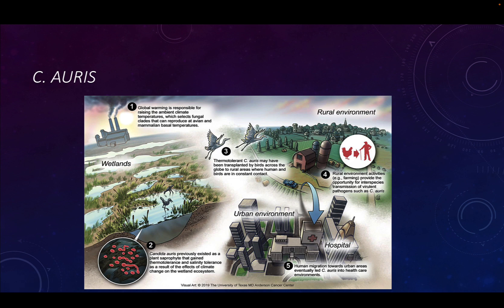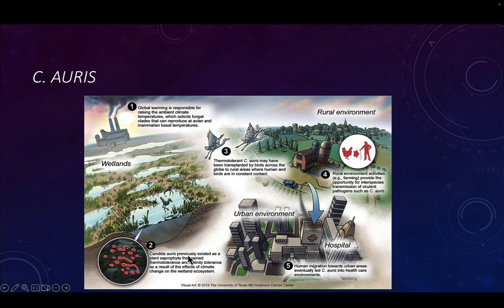Where did Candida auris come from? The best estimate is global warming. Global warming has changed ambient temperatures, which selects fungi that can reproduce at higher temperatures — and higher temperatures means us. The best guess is that Candida auris was previously a plant saprophyte that gained thermo- and salinity tolerance, meaning it can grow in people, because of the effects of climate change on wetlands. It may have been transported by birds from rural to human areas, farming allowed interspecies transmission, and human migration toward urban centers eventually got it into healthcare environments. This is exactly why classes like ecology matter — understanding where diseases come from is important.